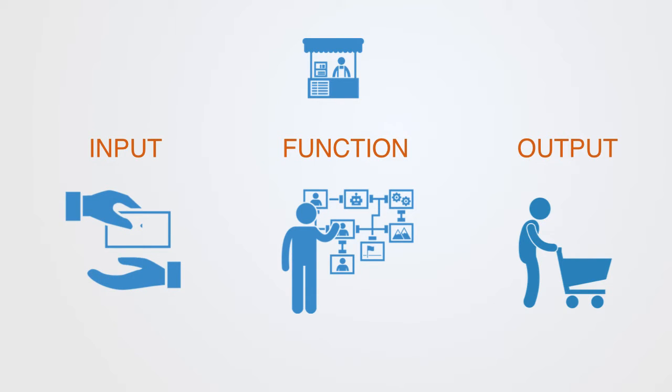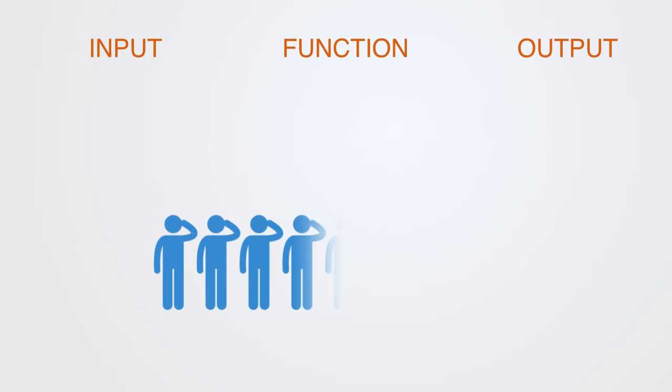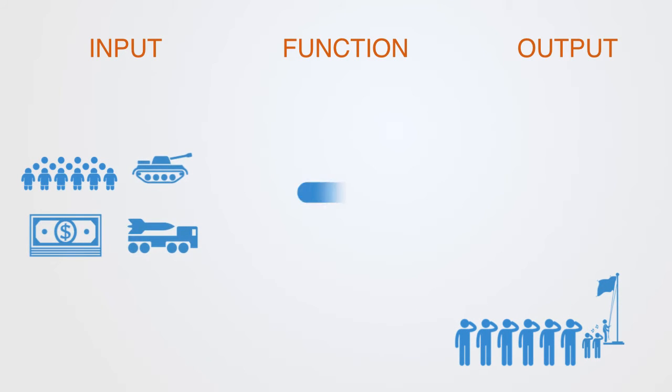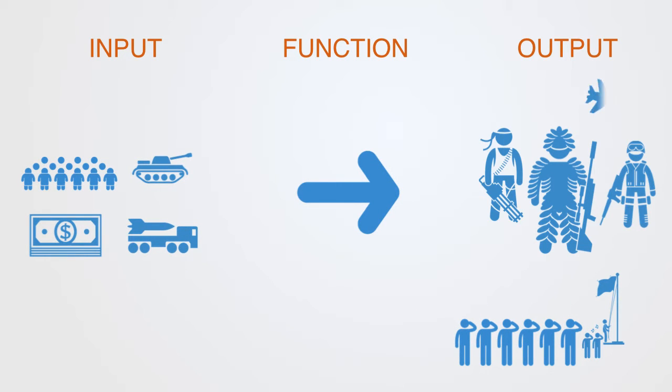So systems take in inputs and through some process they perform a set of operations on these inputs to generate some output. We could think about the military as an example. It will take in people, finance, technology and other resources in order to generate the desired functional output of securing a nation.